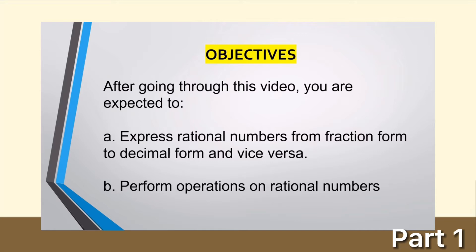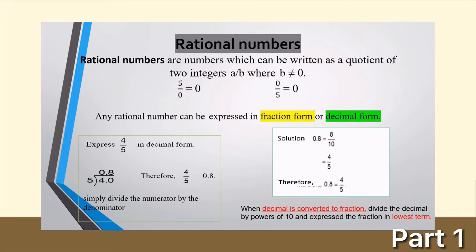We are going to add, subtract, multiply, and divide rational numbers. So, what do we mean by rational numbers? Rational numbers are numbers which can be written as a quotient of two integers, a over b, where b is not equal to zero. Remember, your denominator is not equal to zero.